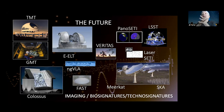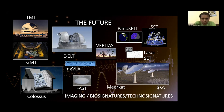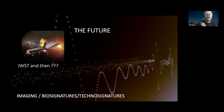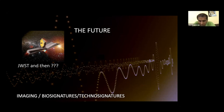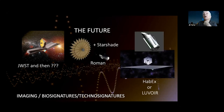If we're lucky, the Next Generation VLA will also allow us to do SETI. If we ever make the ELF telescope — the Exo Life Finder — then its big brother Colossus will be able to find the heat signatures of the equivalent of cities on nearby exoplanets. JWST could find pollutants in atmospheres. We're thinking about the Roman telescope and perhaps in the future a starshade to go with telescopes like HabEx or LUVOIR.